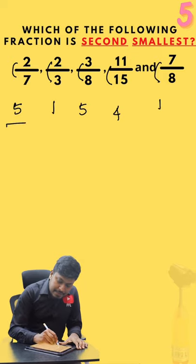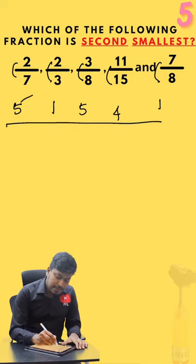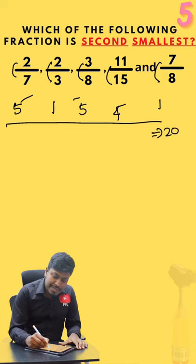After taking the difference, find the LCM for these numbers. 5, 5, 20. This becomes 20 will be the LCM.